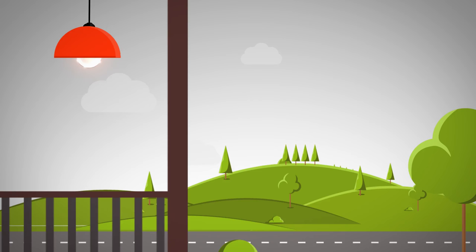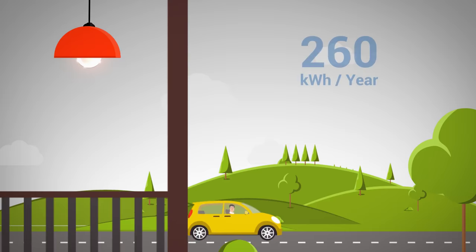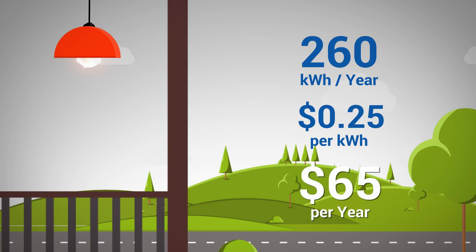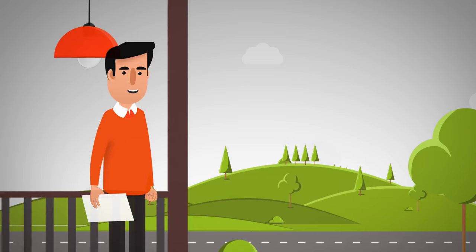Taking that last example a step further, if you left that bulb on every day while at work or school, you would burn 260 kilowatt-hours per year. At 25 cents per kilowatt-hour, that single bulb left burning each workday would cost you $65 per year. You definitely want to turn off all the lights before leaving the house, and switch to low-wattage LED bulbs.